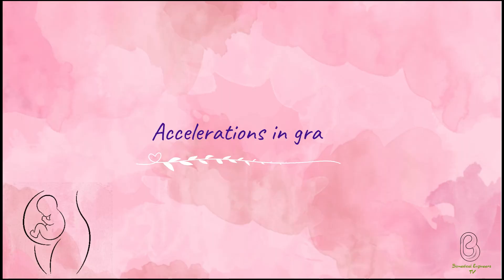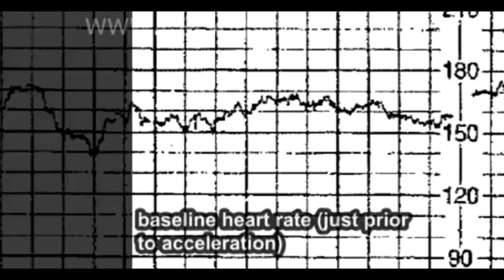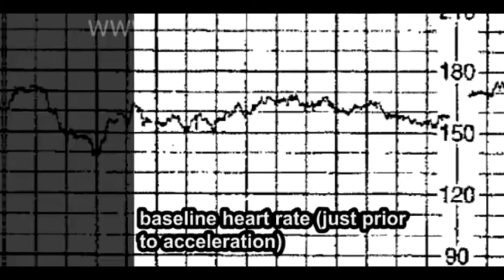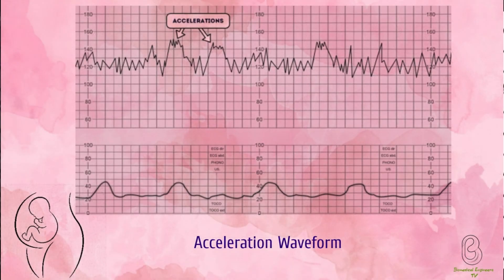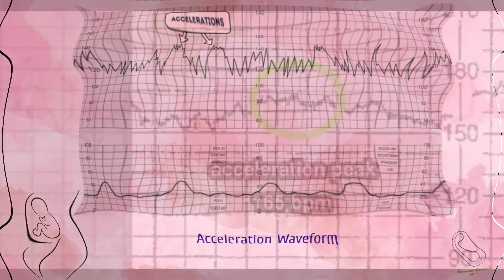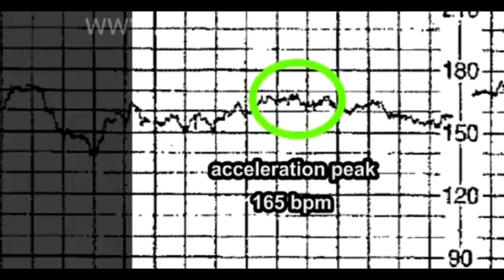Let's look at accelerations in the graph. Accelerations are an abrupt increase in the baseline fetal heart rate of greater than 15 BPM for greater than 15 seconds. The presence of accelerations is reassuring. Accelerations occurring alongside uterine contractions is a sign of a healthy fetus. The absence of accelerations with an otherwise normal CTG is of uncertain significance.